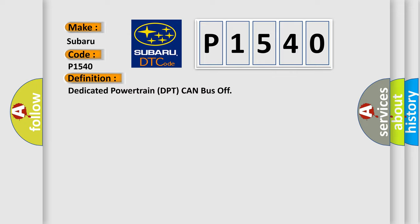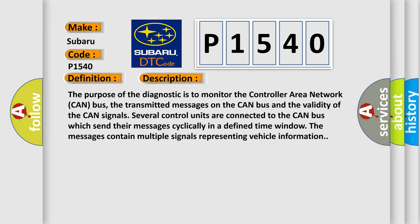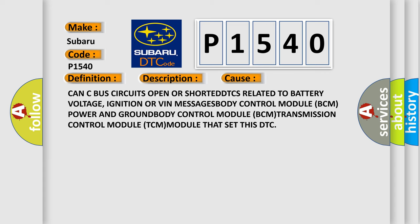The basic definition is: Dedicated Powertrain DPT CAN bus off. The purpose of this diagnostic is to monitor the Controller Area Network (CAN) bus, the transmitted messages on the CAN bus, and the validity of the CAN signals. Several control units are connected to the CAN bus which send their messages cyclically in a defined time window. The messages contain multiple signals representing vehicle information. This diagnostic error occurs most often in these cases: CAN bus circuits open or shorted, DTCs related to battery voltage, ignition or VIN messages, Body Control Module (BCM) power, and BCM or Transmission Control Module (TCM) issues that set this DTC.